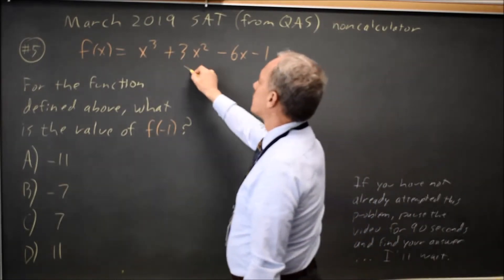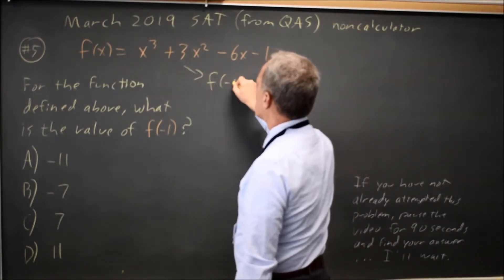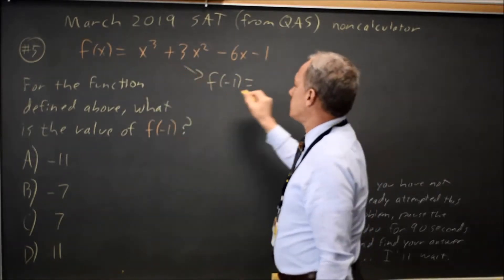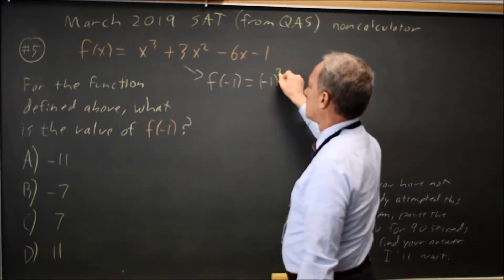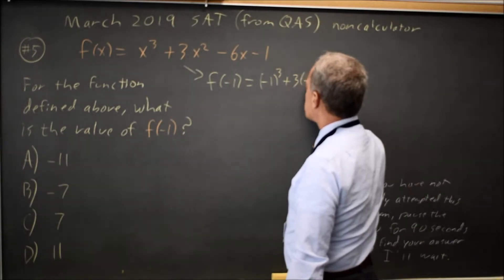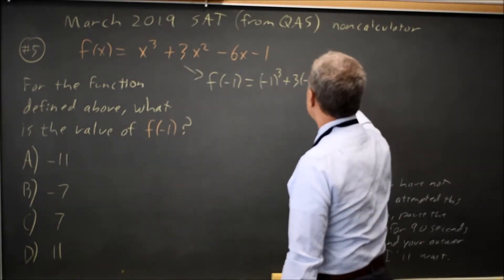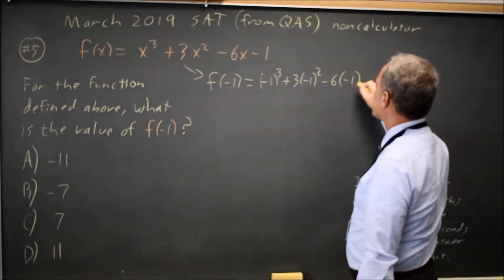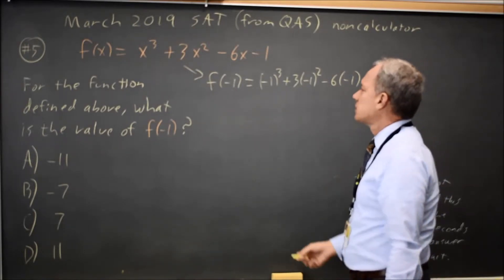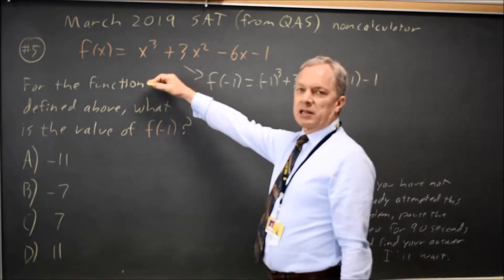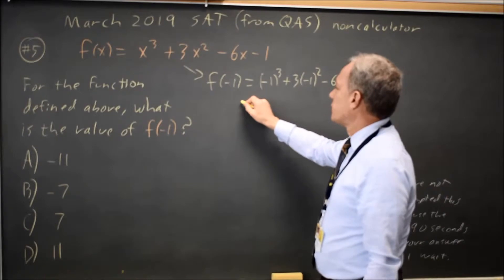To find f of negative 1, f says whatever's in the parentheses, you cube that number and then add 3 times that number squared, and then subtract 6 times the number in parentheses, and then subtract 1 from that. And that's how I think it through in my head for the f of x notation.